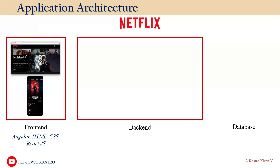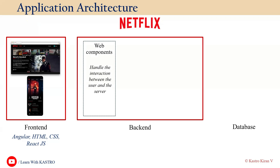The back-end component is where our application source code is available. The back-end is divided into three levels. The first is web components, which handle the interaction between the user and the server. The server here is an EC2 instance, especially in AWS cloud, where we launch EC2 instances.